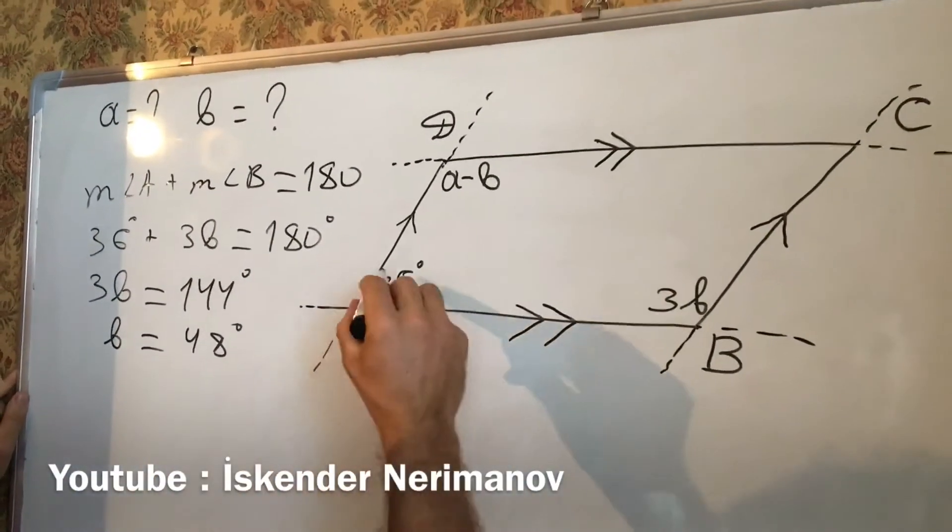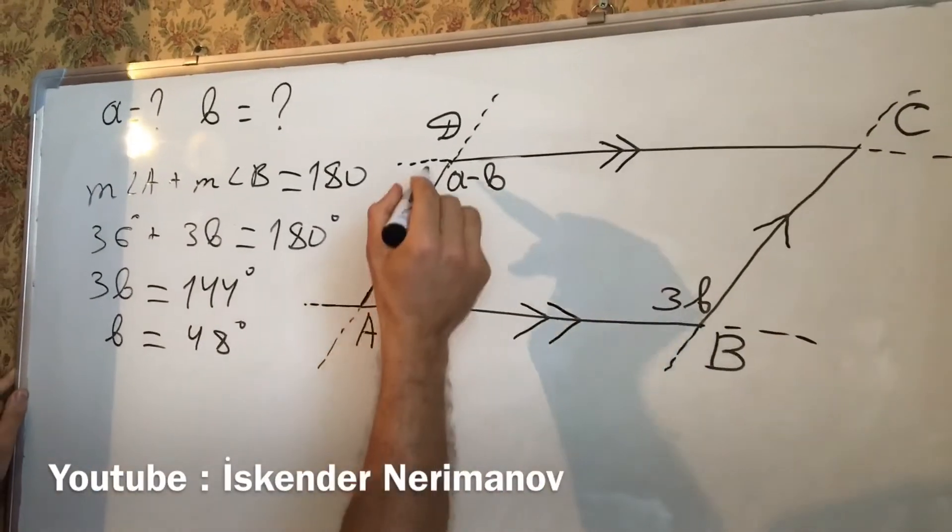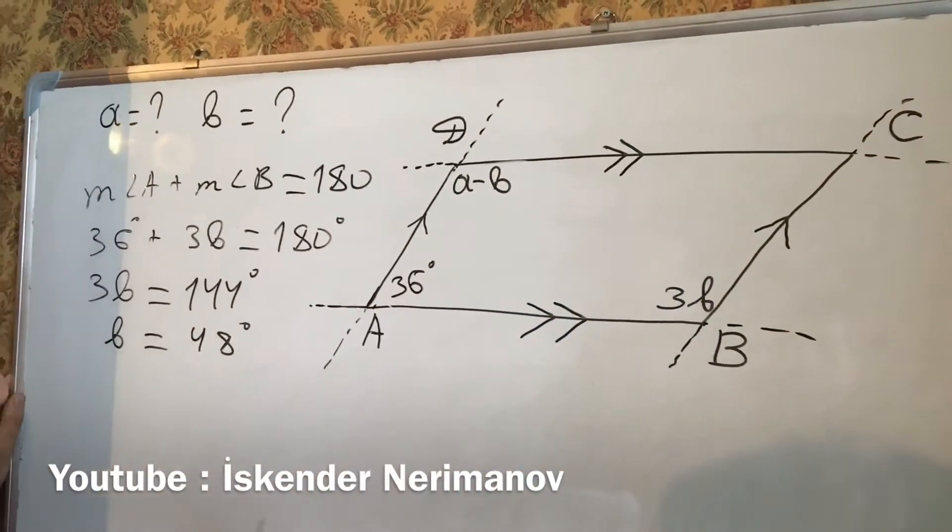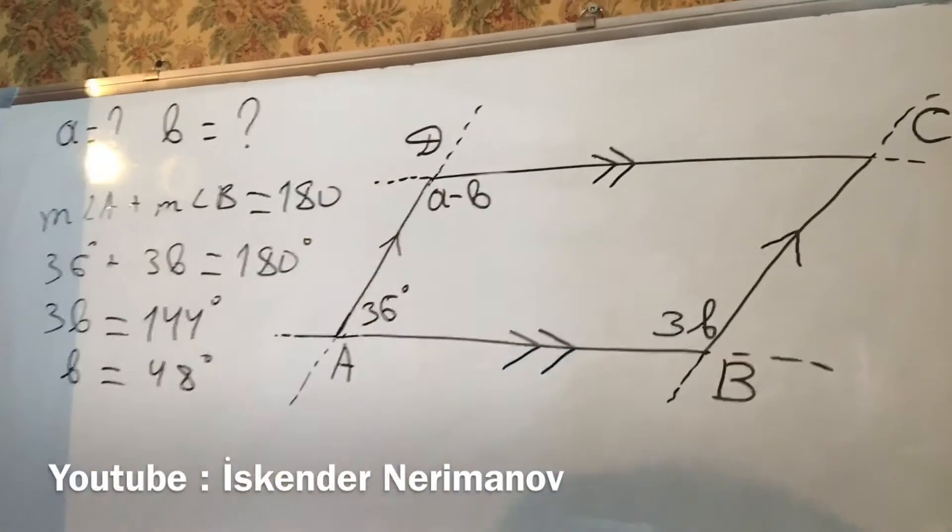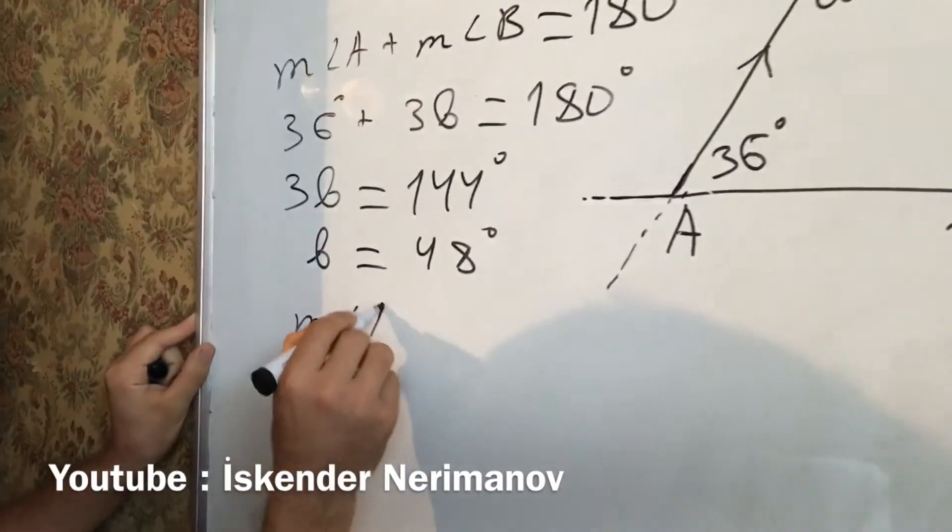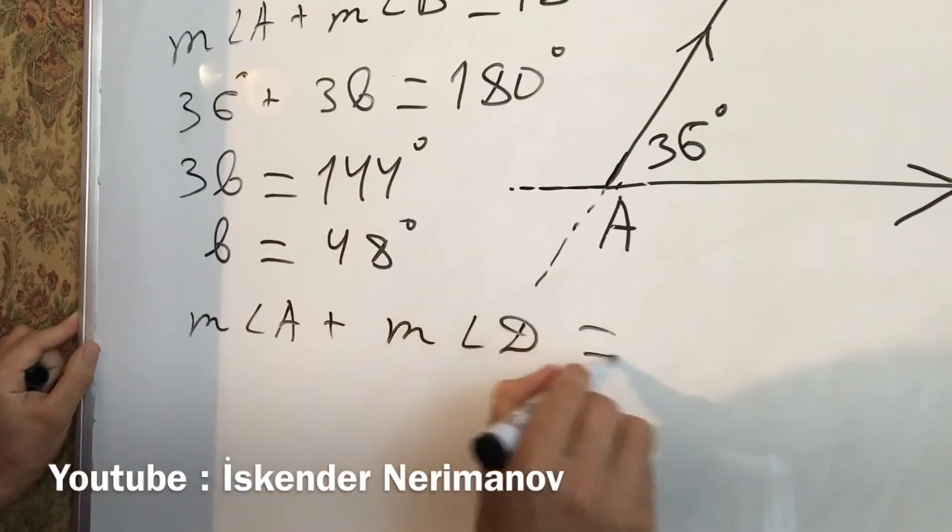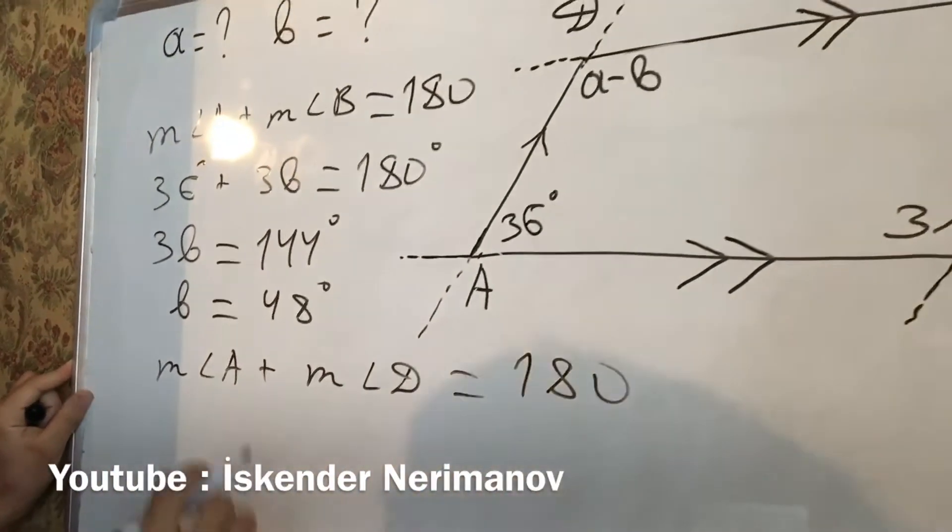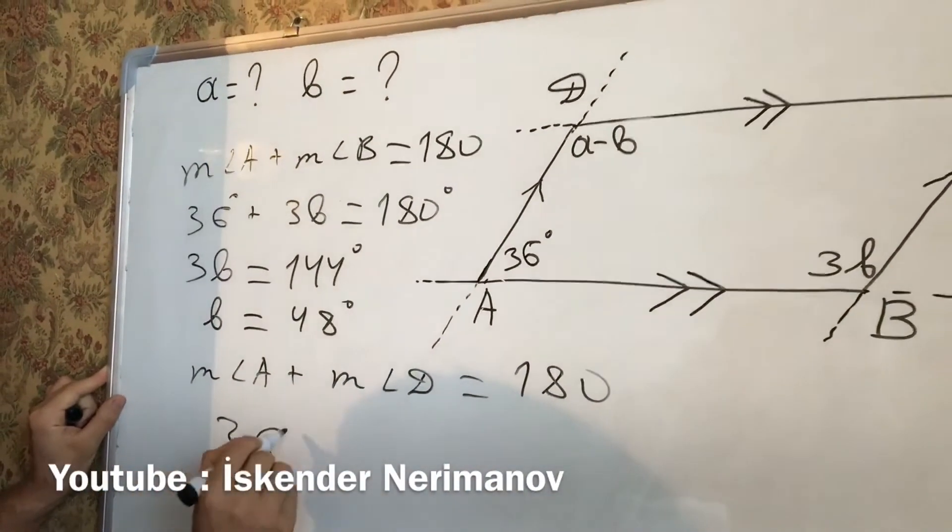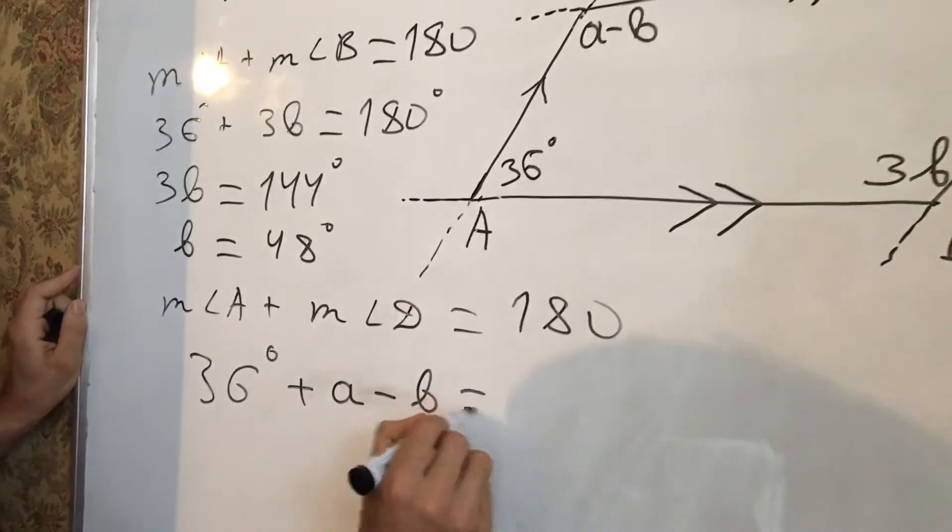Then, DC parallel AB and AD is transversal. Angle A and angle D are interior angles. Then, measure angle A plus measure angle D equal to 180. 36 plus A minus B equal to 180.